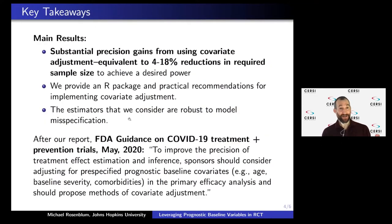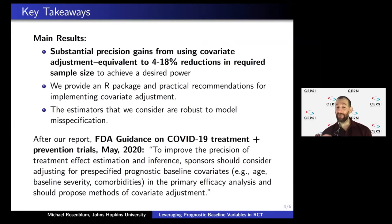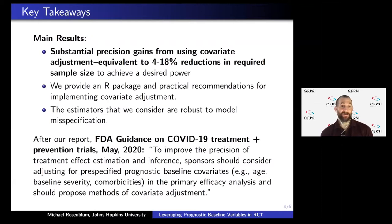Our main results: we found substantial precision gains from adjusting for baseline variables, equivalent to reducing the sample size needed by between 4% and 18%, and again, at no cost. That would lead to quicker knowledge and evidence generation about which treatments work and which don't. We provide our package and practical recommendations on how to do this.